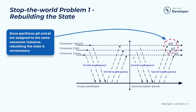What are some of the issues with this whole process? The first issue is the need to rebuild some of the states. You first rebalance the consumer instances, revoke partitions, and clear up the state, only to rebuild some of those when new partitions are assigned. In this case, you can see partition zero and partition one are actually assigned back to the same consumer instance, so rebuilding their state is wasteful. If you have a large state, this can take some time — this is the problem of unnecessary state rebuilding.